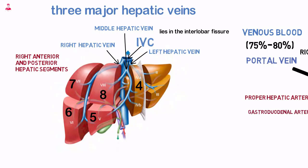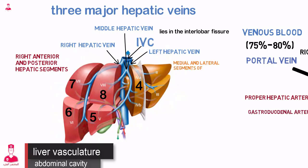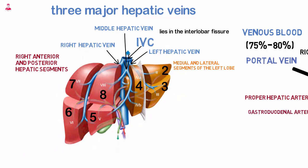The smallest hepatic vein, the left hepatic vein, courses between the medial and lateral segments of the left lobe, draining segments 2 and 3, then enters the left anterior surface of the IVC.